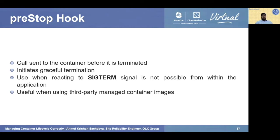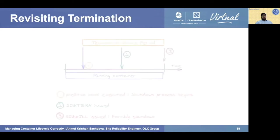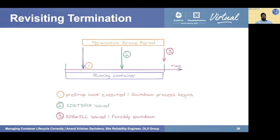Revisiting the termination lifecycle graph, the pre-stop hook is called immediately as the grace period starts and completes before the SIGTERM signal is issued. This can be used to handle graceful termination effectively, even for applications that don't implicitly support graceful termination.